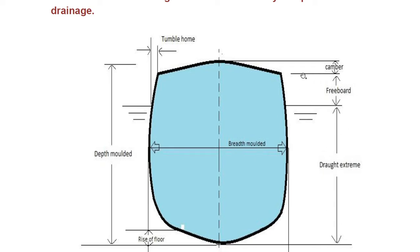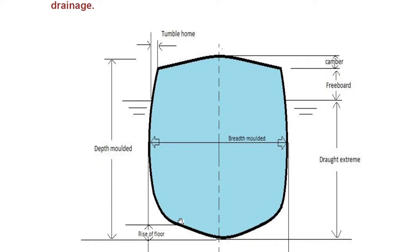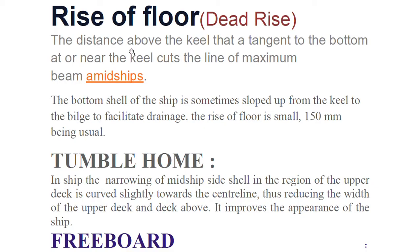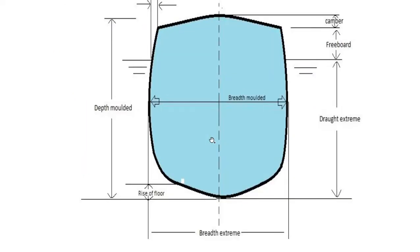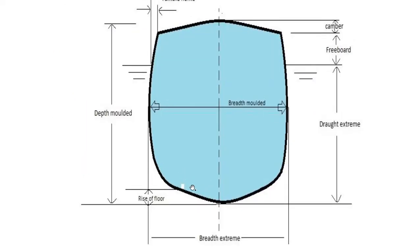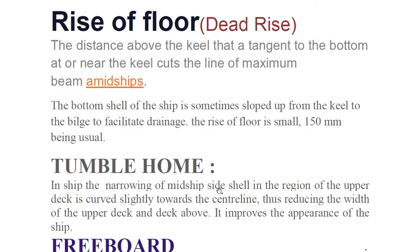Also visible in the diagram are freeboard, deck height at the side, and draft. The rise of the floor is the distance above the keel that a tangent to the bottom at or near the keel cuts the line of maximum beam amidship. Also known as dead rise, the bottom shell is sometimes sloped up from the keel to the bilge to facilitate drainage toward bilge wells. The rise of the floor is small — 150 mm is usual.